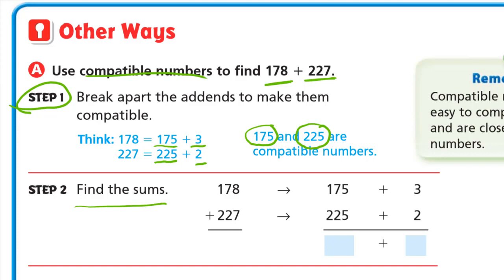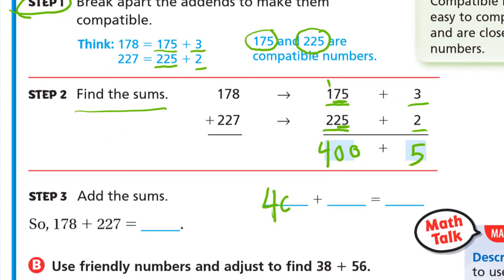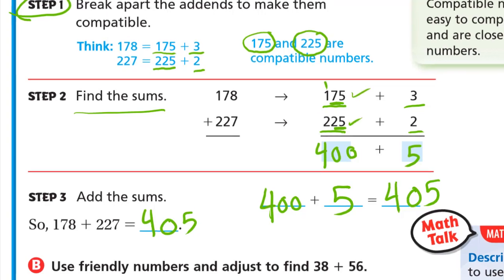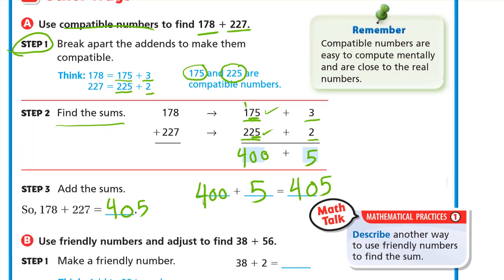And in step number 2 we will find the sums. So the 178 is 175 plus 3 and the 227 is 225 plus 2. Now we add 3 plus 2 is 5 and 175 plus 225. 75 plus 25 is 100. So I write two zeros and I carry up 1. 1 plus 2 is 3 plus 1 is 4. So our final answer is 400 plus 5 equals 405. So again I broke apart the 178 into 175 plus 3 and the 227 into 225 plus 2. Because 75 plus 25 is 100. And that is easy to add.